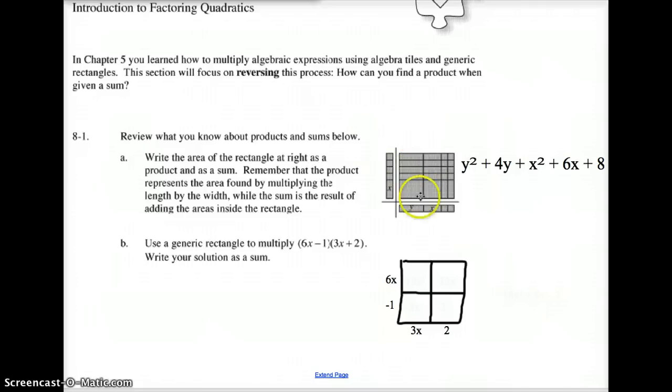Now, the sum of this shape right here. This shape right here, I guess they're calling a Y tile. This shape right here, they're calling an X tile. So, this is Y squared, X squared, here's your Y's, your 4 Y tiles, here's 4, and 2 more is 6 X tiles, and here's your 8 unit tiles.